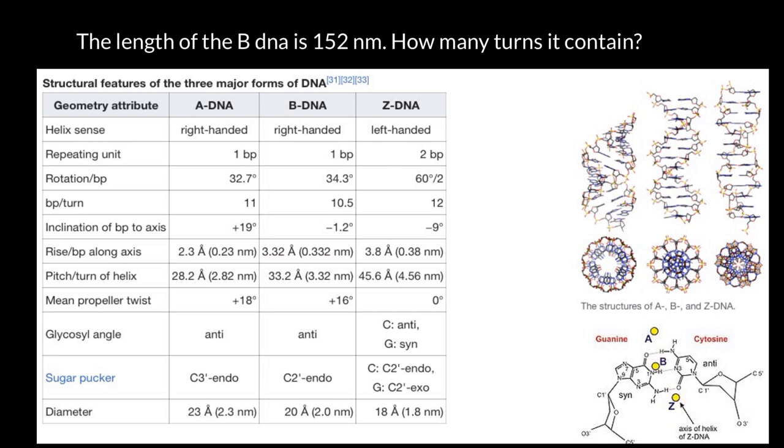I would say that B-DNA form would be the relaxed form of the DNA. Some people may think that relaxed form would be two backbones that go in parallel, but actually relaxed form of the DNA would be this B-DNA form.